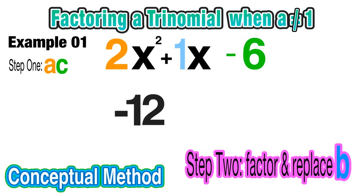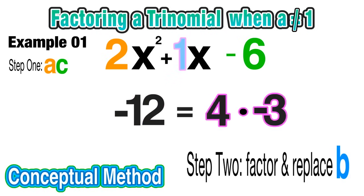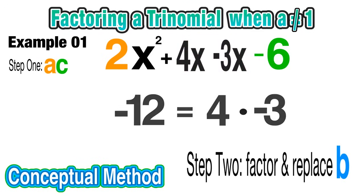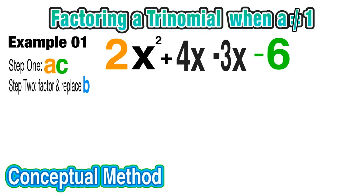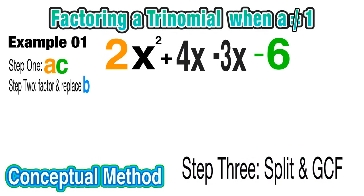Our next step is to factor and replace b. We want to factor that -12 to make it represent our b term, which is positive 1. So we know that -12 equals 4 times -3, and we're choosing those values because they add to positive 1, which was our b term. So this is what we mean by 'replace b': instead of 1x, we're going to replace that with two terms. In this case, plus 4x and minus 3x, which still represents that 1x.